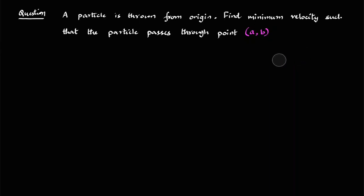So I hope you have already tried this question. Now let me just try to solve this question in a unique way. So the question says a particle is thrown from origin. Find the minimum velocity such that the particle passes through a point A comma B. This is given in front of you.